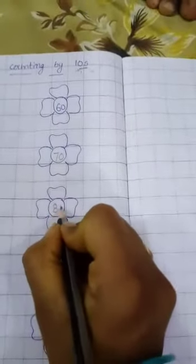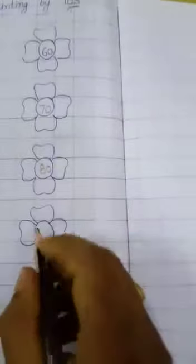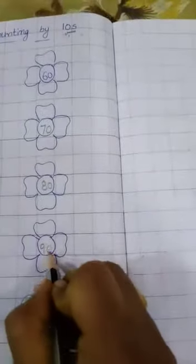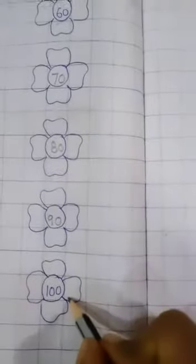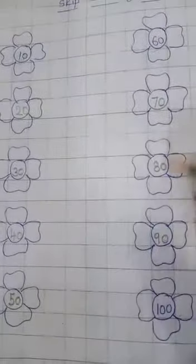So, we have to write 70. 80, 90. After 90, 100. Okay. We have to complete it. CW and HW also. Thank you.